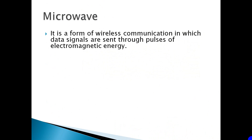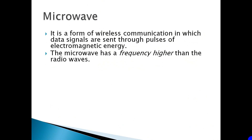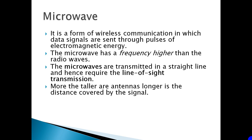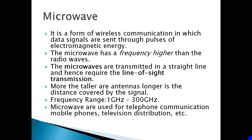Microwave. It is a form of wireless communications in which data signals are sent through pulses of electromagnetic energy. The microwave has a frequency higher than radio waves. Microwaves are transmitted in a straight line and hence require line-of-sight transmission. The taller the antennas, the longer the distance covered by the signal. The frequency range is 1 GHz to 300 GHz. Microwaves are used for telephone communication, mobile phones, television distribution, etc.